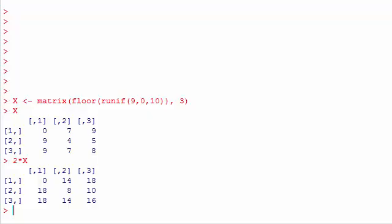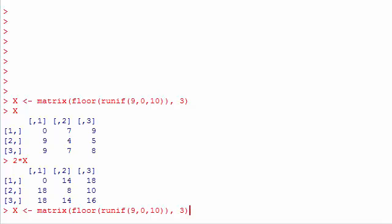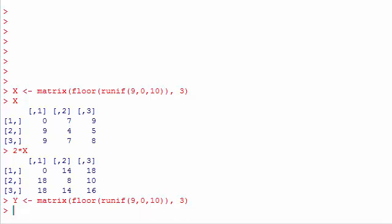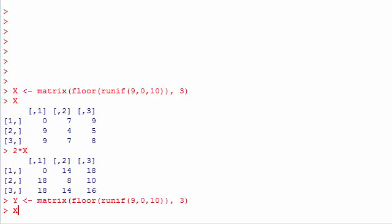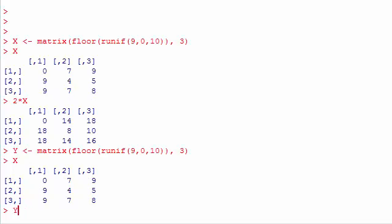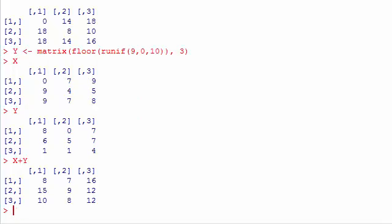Matrix addition in R, you also do that using the plus sign. So let's do one more matrix and call this Y instead. Like this, so it's also a 3 by 3 matrix. And let's just print both of them. These are my two matrices. And if I want to add them, I just simply type X plus Y. And I get this result.